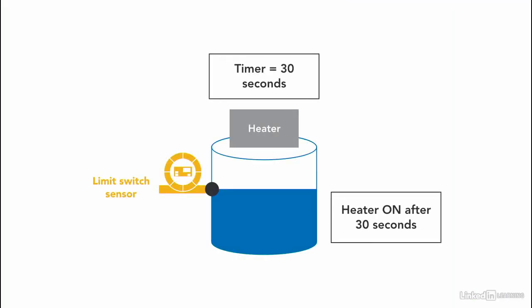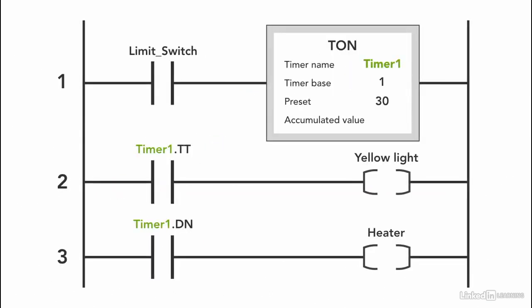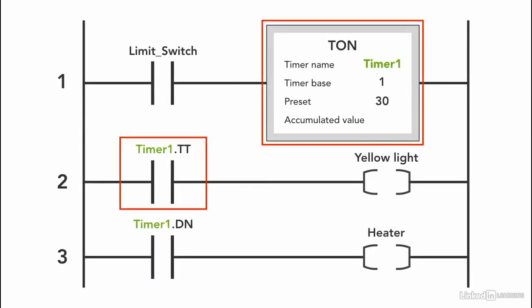Using the same previous example, let's say we have a yellow light to turn on while the timer is timing during the 30 seconds, indicating that the heating process is going to start after this delay. We use a timer on delay set to 30 seconds and use the timer timing bit connected to the yellow light, using an XIC instruction for the timer timing bit.